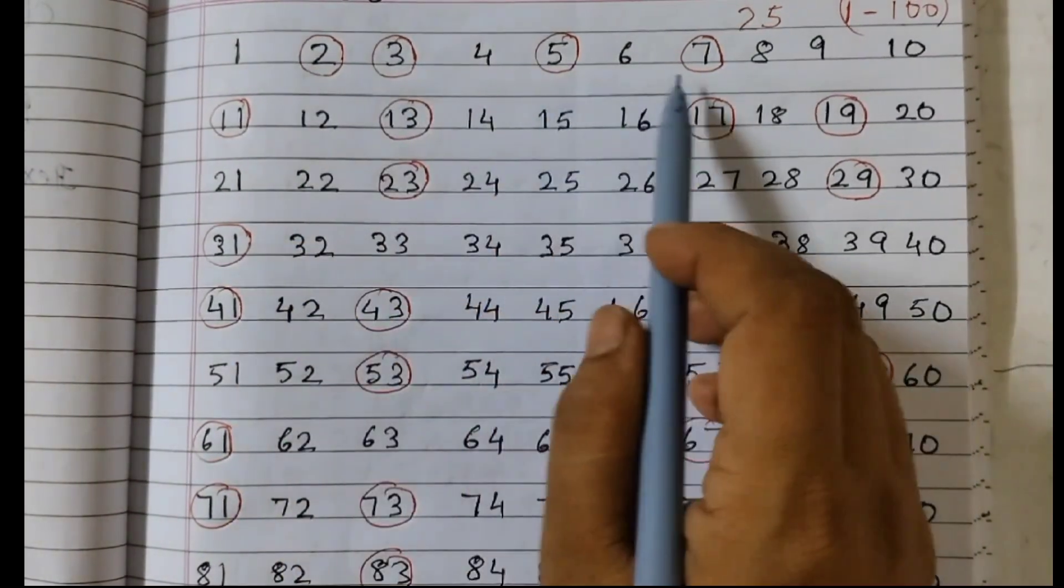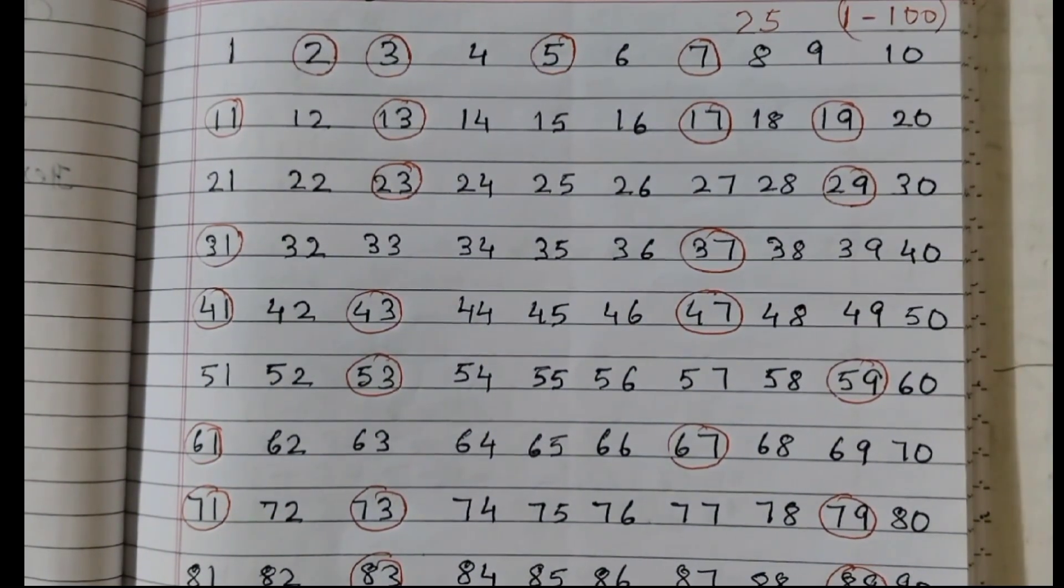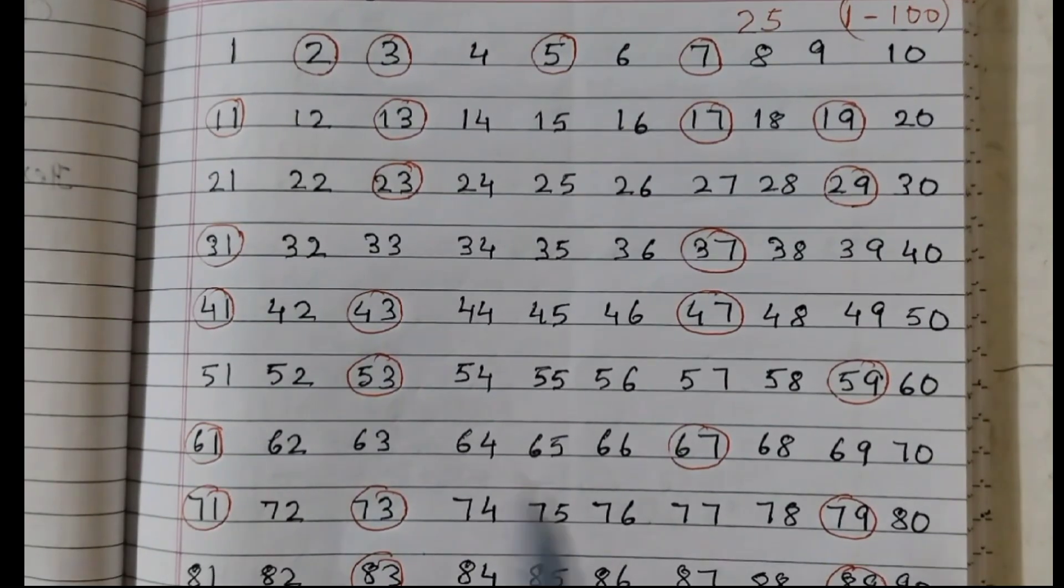2, 3, 5, 7, all these are prime numbers. There are in total 25 prime numbers between 1 to 100. So we need to find out the smallest difference between any two successive prime numbers.